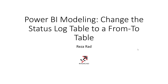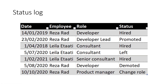It is quite common that when you work in a data analysis solution you come across a table like this. This is what I call a status log table because it has the log of all status changes. For example, you normally have a date which is the date of status change, an item — in this case it's employee, it might be product, it might be anything — and because it is employee it has some description around it such as role of the employee and the status itself.